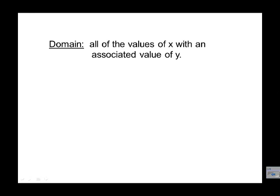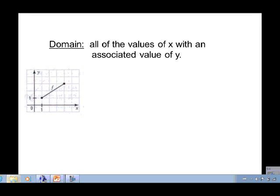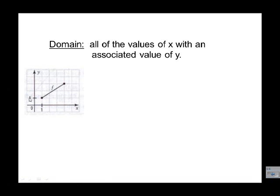So domain — we're looking at all the values of x with an associated value of y. We're going to read from left to right, just as if we're reading a book, and look at what the leftmost point on the graph is. That would represent the smallest value of x. That happens right here, and our x coordinate is 1.